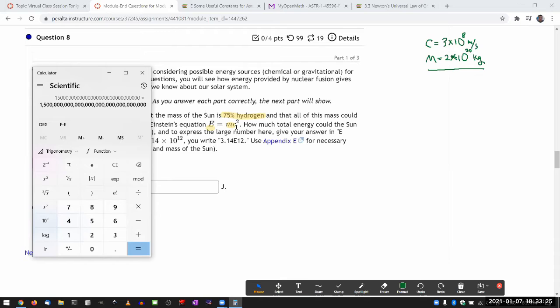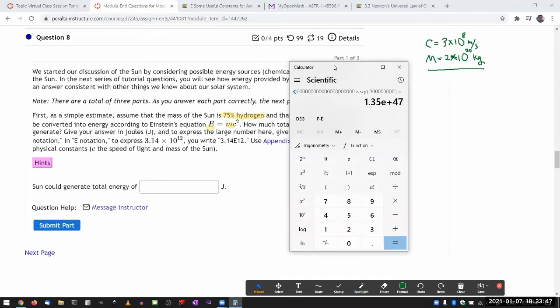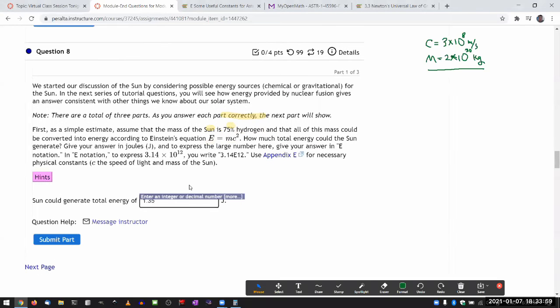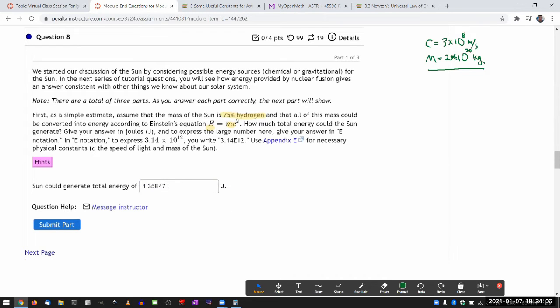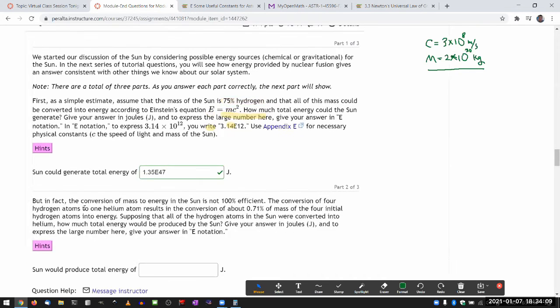And I need the c squared. So I'm going to type in c, 3 times 10 to the power of 8 meters per second. And I need to square it. So say equal. And that huge number is what it says, the amount of energy that the sun could generate over its lifetime possibly. So 1.35 times 10 to the power of 47 joules. And this is the classic example of astronomical number. I have no intuitive feel for what kind of number that is. It's just large.